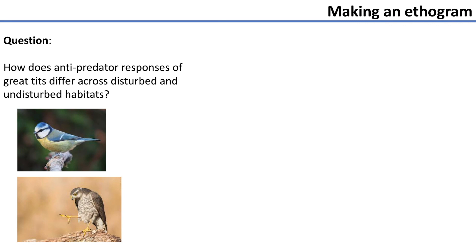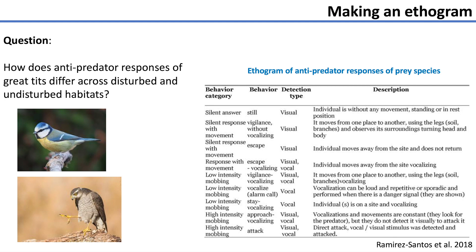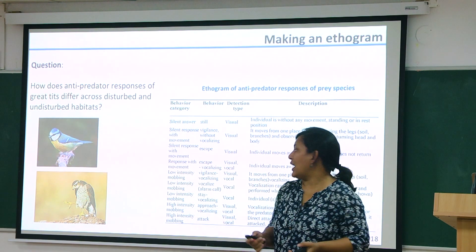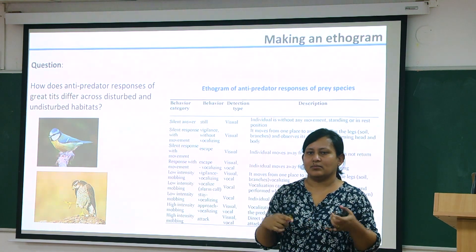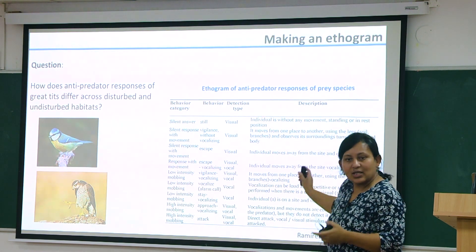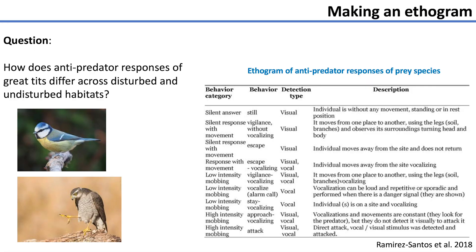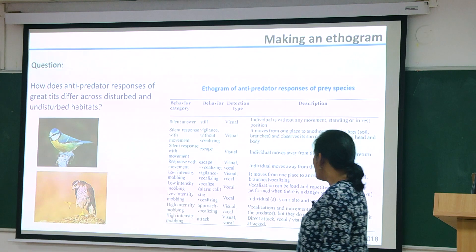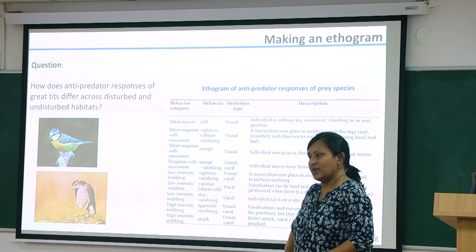For example, in a study on how anti-predator responses of great tits differ between disturbed and undisturbed habitats, you first make an ethogram. You don't need to make an ethogram of everything — only the anti-predator behaviours you're interested in, such as mobbing and alarm behaviour when it sees a predator. Here is an example ethogram: it is very well described, with behaviour category, what the behaviour is, whether detected using visual cues or vocalisation, and a description associated with each. For any behavioural study, this is what you begin with — a good ethogram.